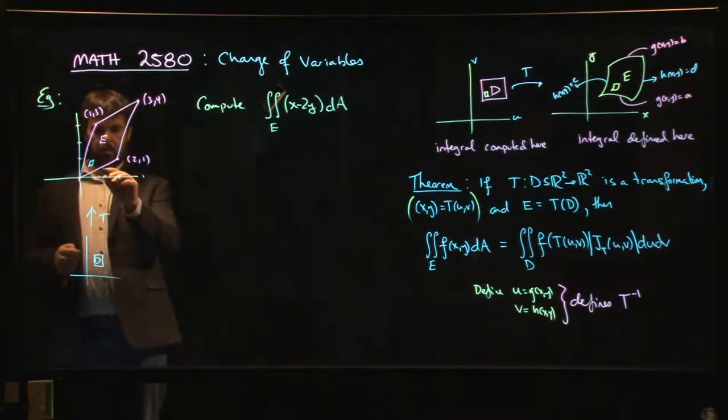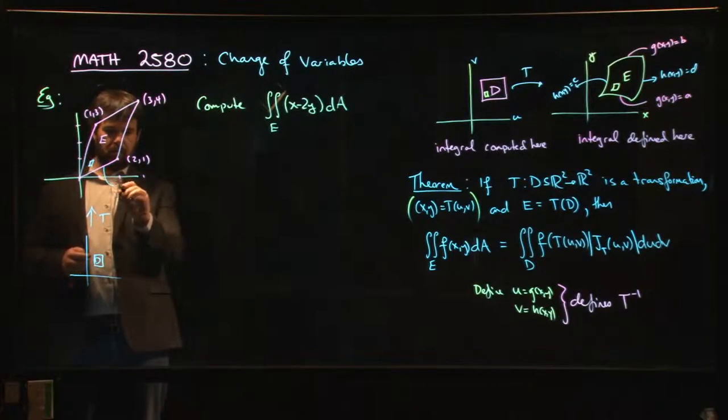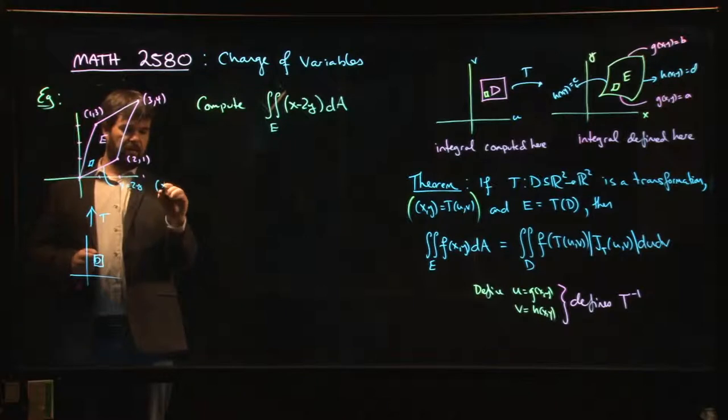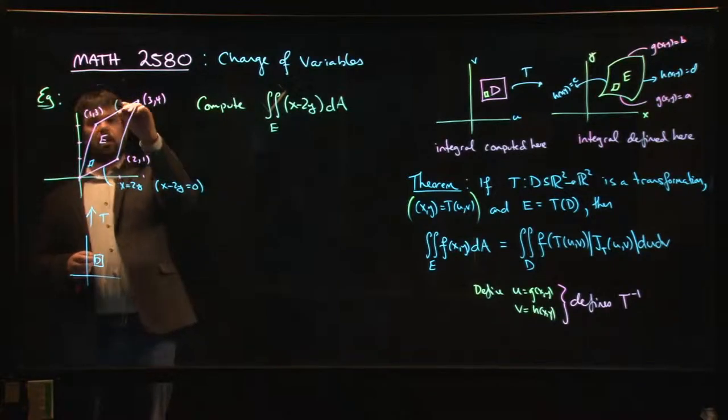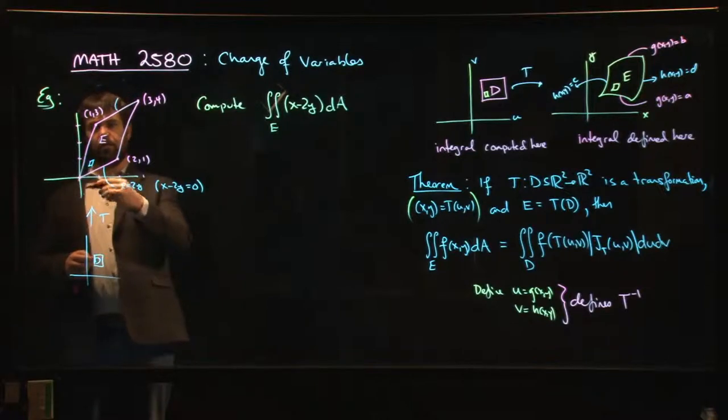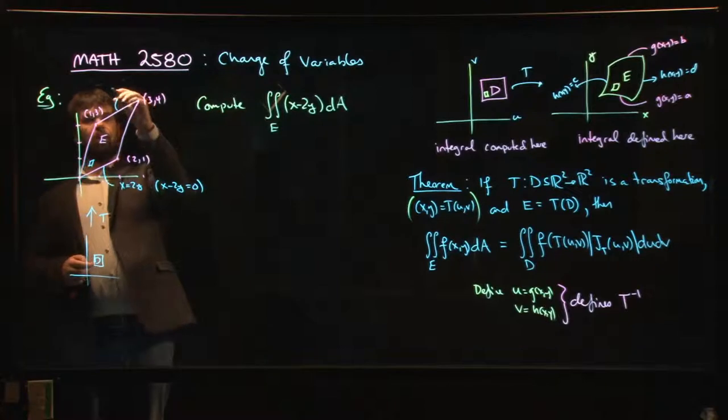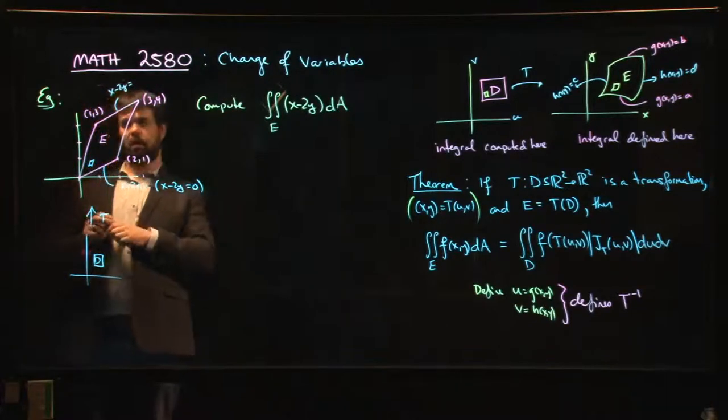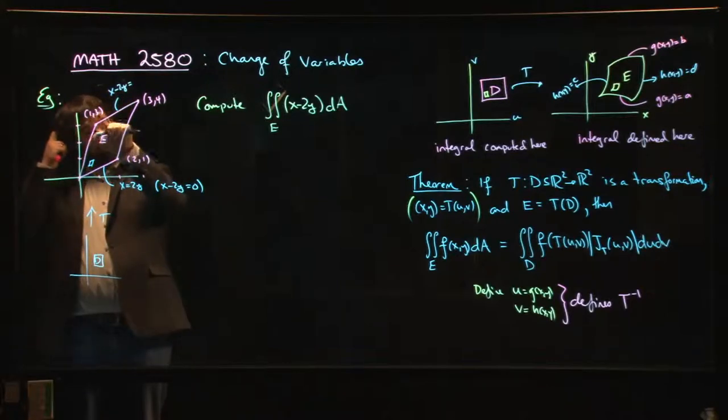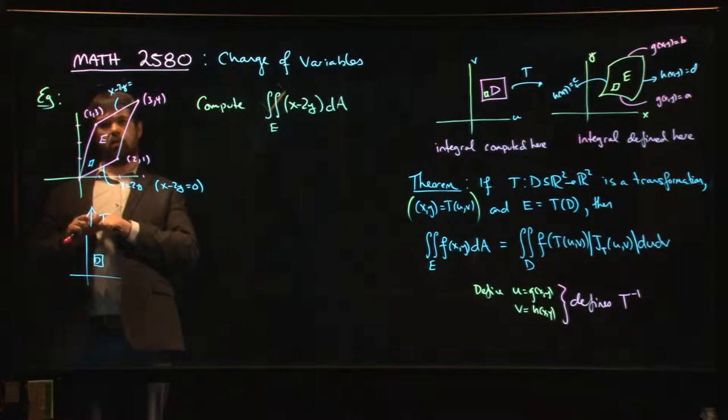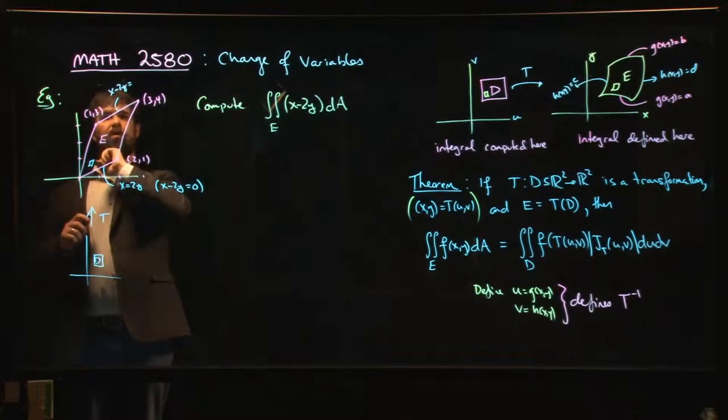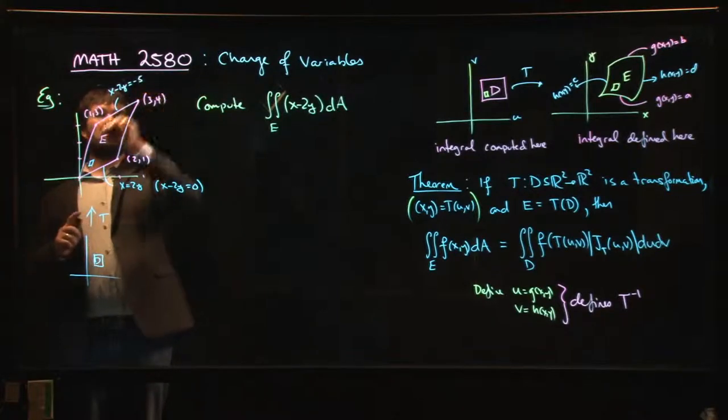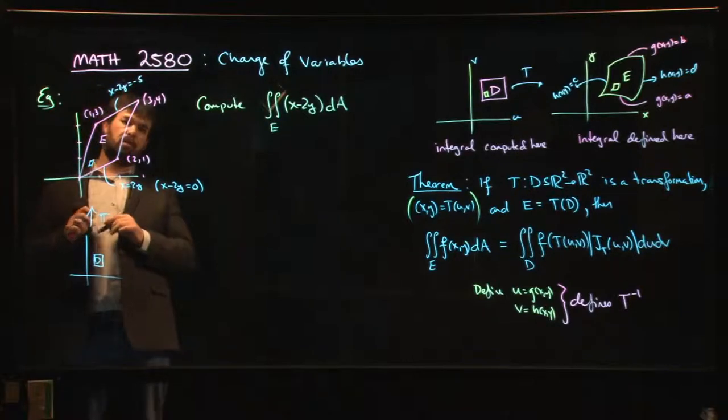Let's see, this line here is x equals 2y, or another way I might write that is x minus 2y equals 0. This one up here, it's the same thing just shifted up a little bit. So up here this one is going to be x minus 2y equals... let's just look at either of the two points here. If I do x minus 2y, I get minus 5.